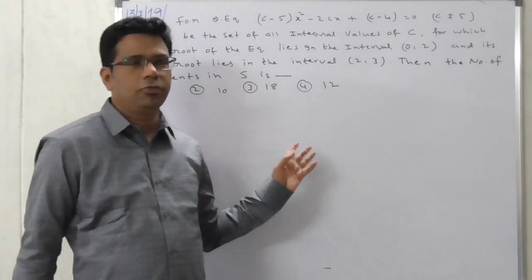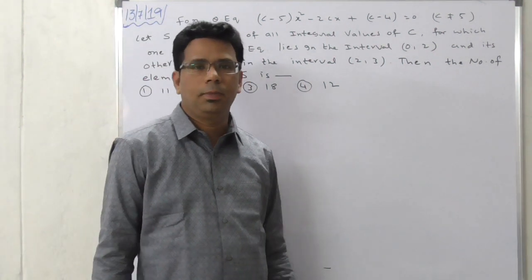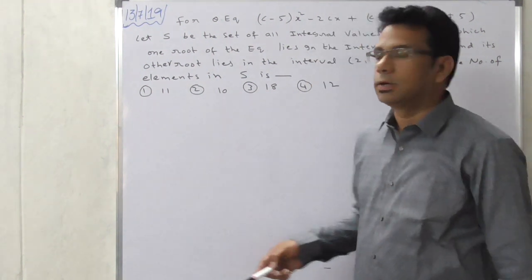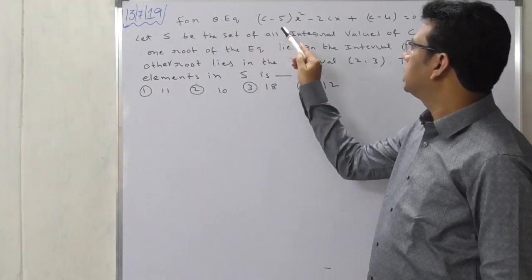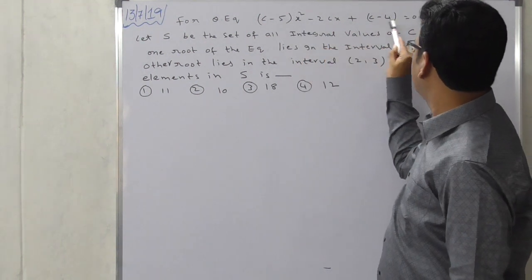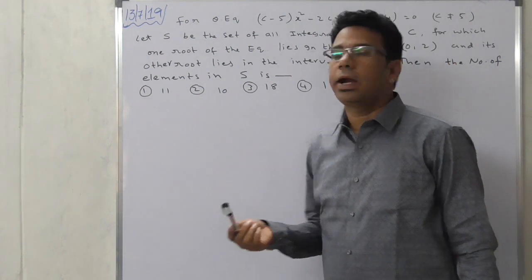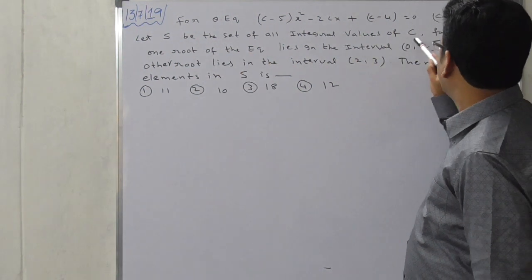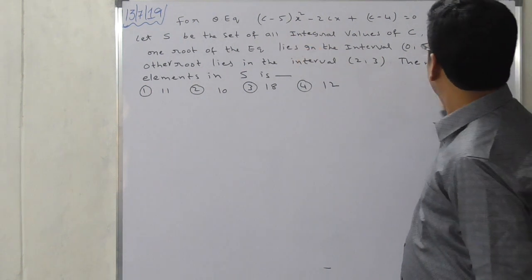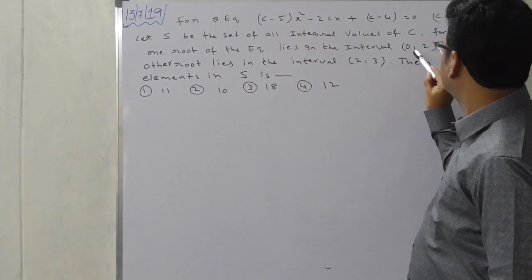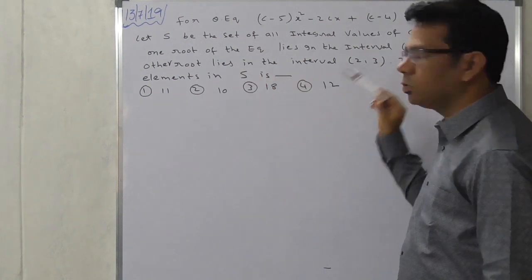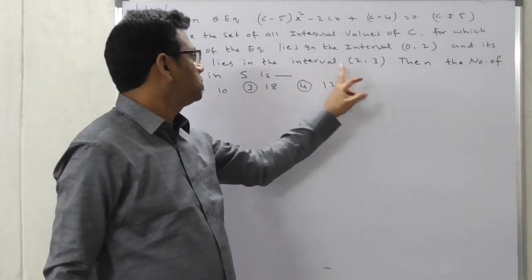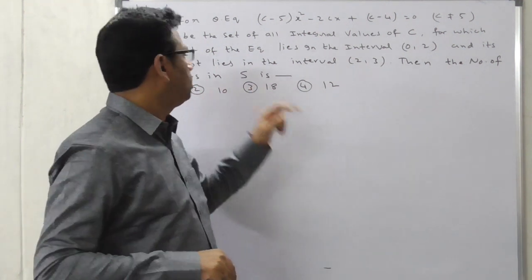Friends, this question is from quadratic equations, JEE. Just observe the question carefully. For the quadratic equation (c minus 5)x² minus 2cx plus (c minus 4) equal to 0, the given condition is c not equal to 5. Let S be the set of all integer values of c for which one root of the equation lies in the interval (0, 2) and its other root lies in the interval (2, 3). We need to find the number of elements in S.